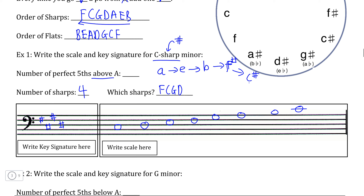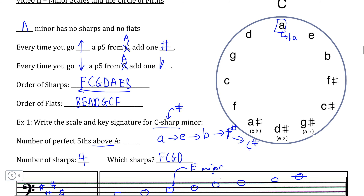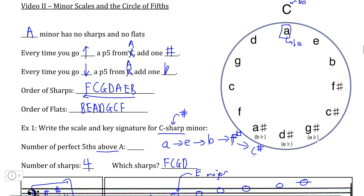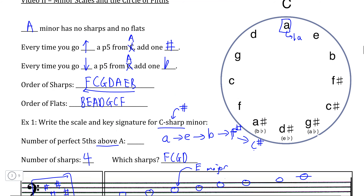Now, what you'll find is if you actually do this first by finding the relative major of C sharp minor — we can find that relatively easily because if C sharp is La, all we need to do is go La, Ti, Do — and we see that Do in this case is E. And we know that E major, if we follow the same pattern on the circle of fifths, is going to have four sharps, which is exactly what we found when we used the circle of fifths to determine the key signature of C sharp minor. So regardless of whether you use the circle of fifths to find the key signature of the relative major scale first, or directly to find the key signature of the minor scale, either way the circle of fifths works, as long as you understand to center minor keys on A minor rather than C major.